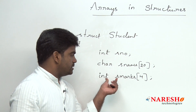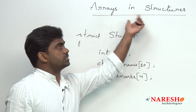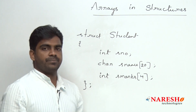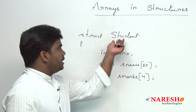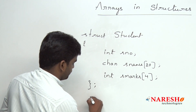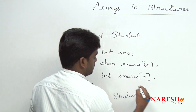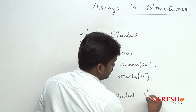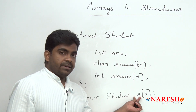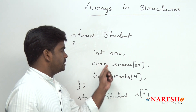This is the arrays in structures concept. Now, how will the memory be allocated? For example, if I want to store 3 student records, we create a struct student array variable 's' of 3. So 's' is an array variable which holds 3 records of student type.